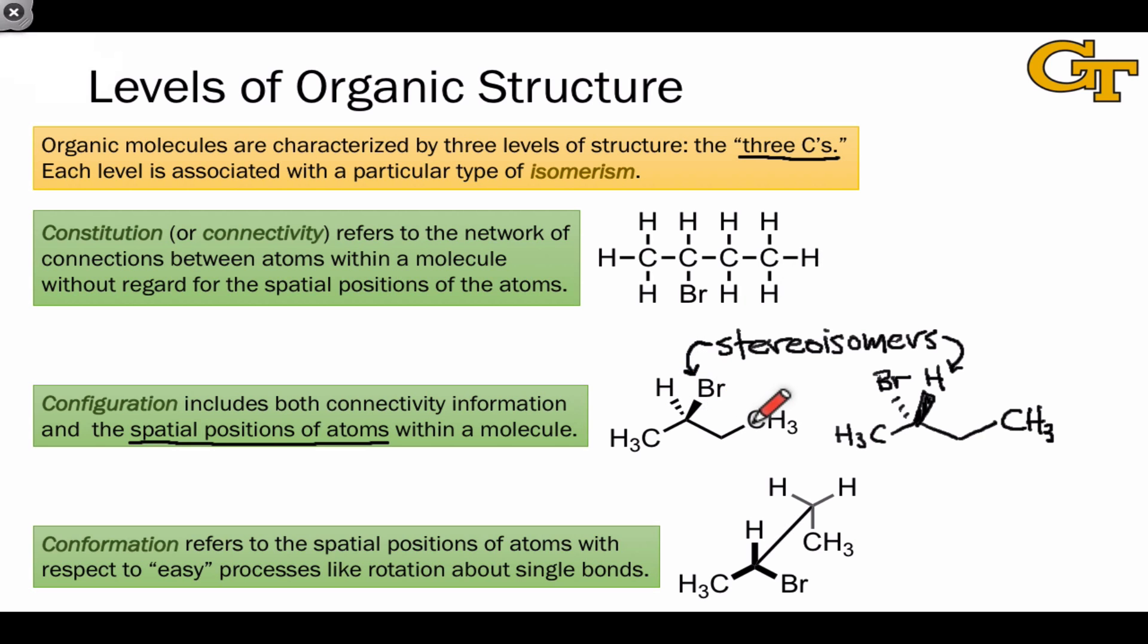In this case, for example, in order to convert the compound on the left to the compound on the right, we would have to break the carbon-bromine bond, break the carbon-hydrogen bond, and then put the hydrogen and bromine back in place so that the hydrogen is in front and the bromine is in the back. Under the vast majority of circumstances, stereoisomers do not interconvert.